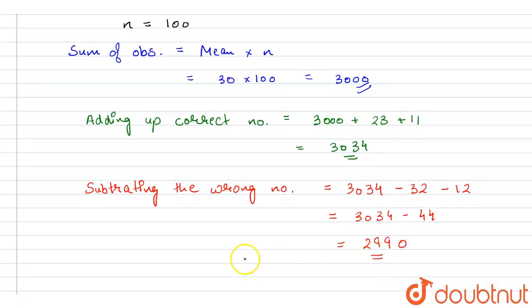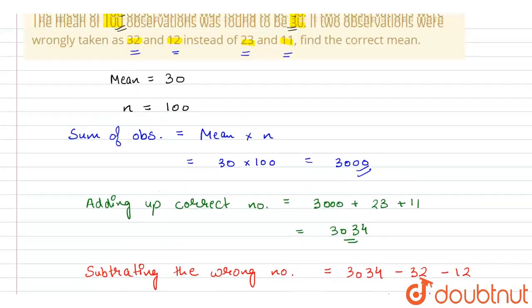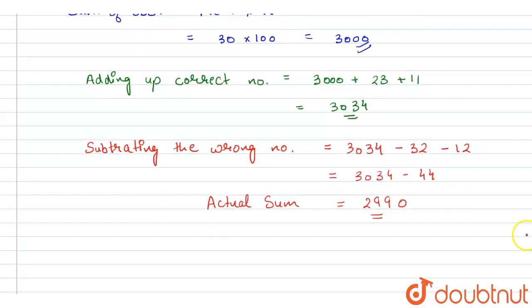So the actual sum, or the correct sum, will be equal to 2990. Now we also have to find out the correct mean. So to find out the correct mean, we have the formula of mean as mean is equal to sum divided by the number of observations. Now the actual sum is 2990 and the number of observations is 100, because observations are not changed. Only the two numbers were incorrectly taken. Now the mean is equal to 29.90. So this is the correct mean with the correct values.